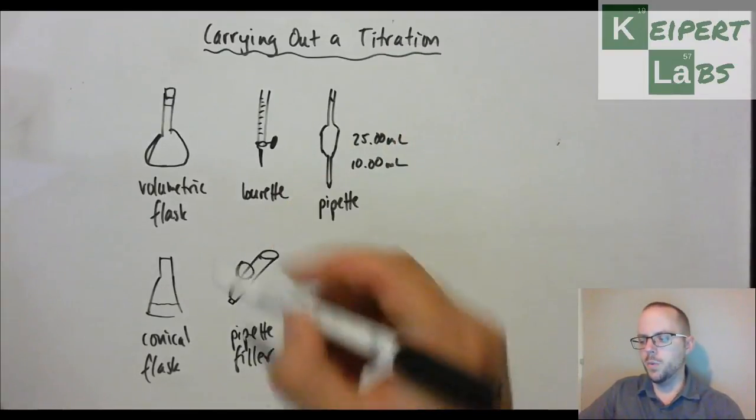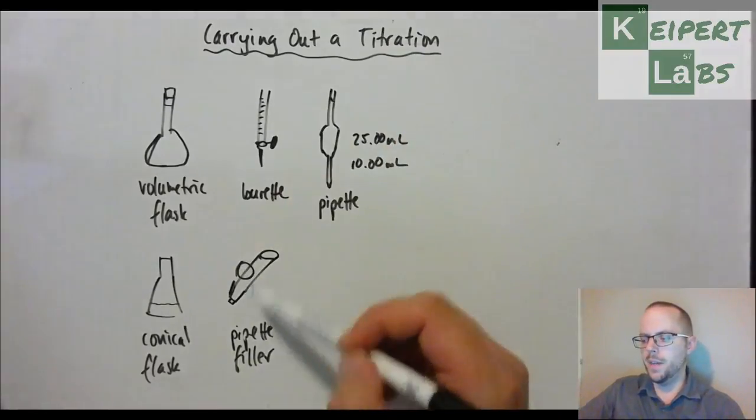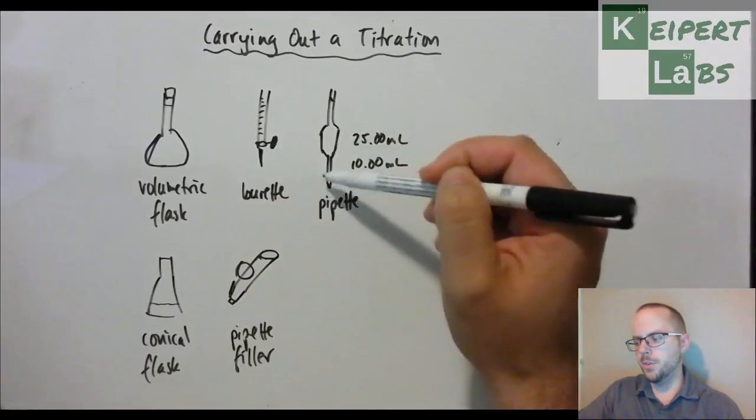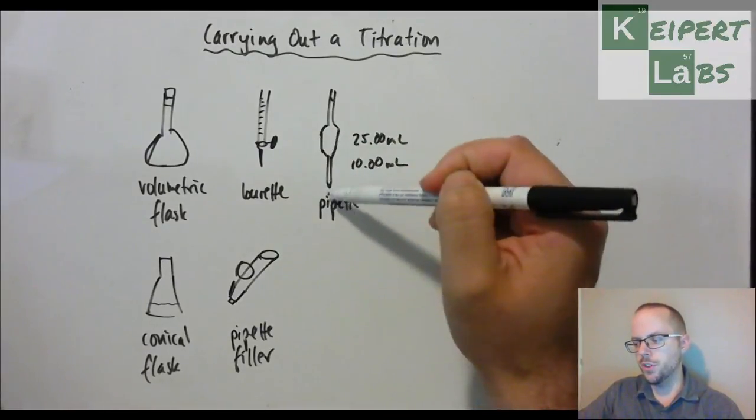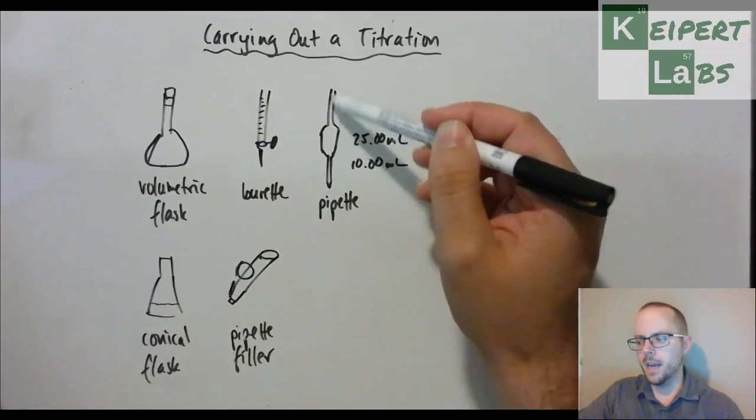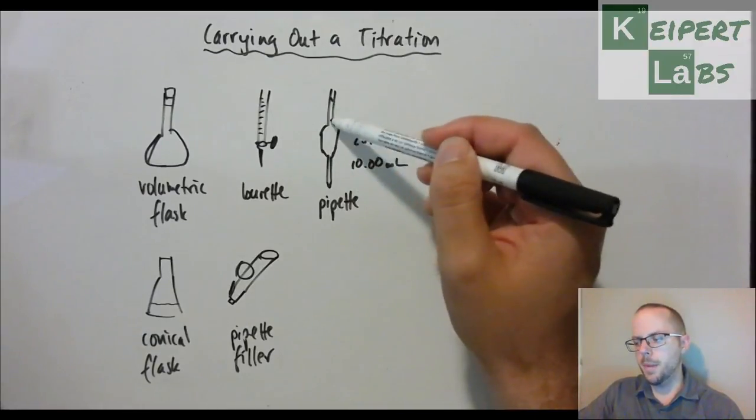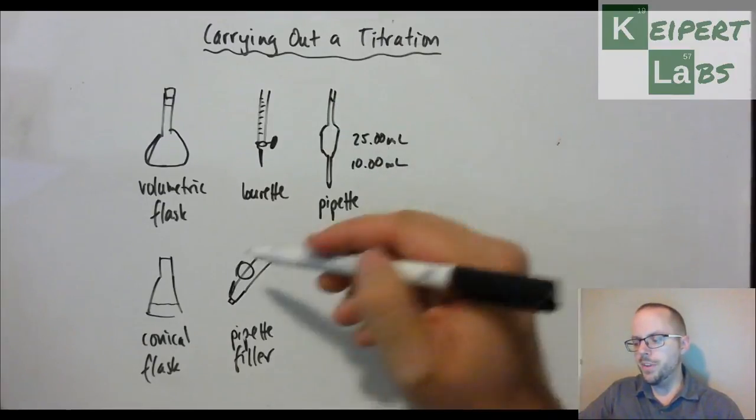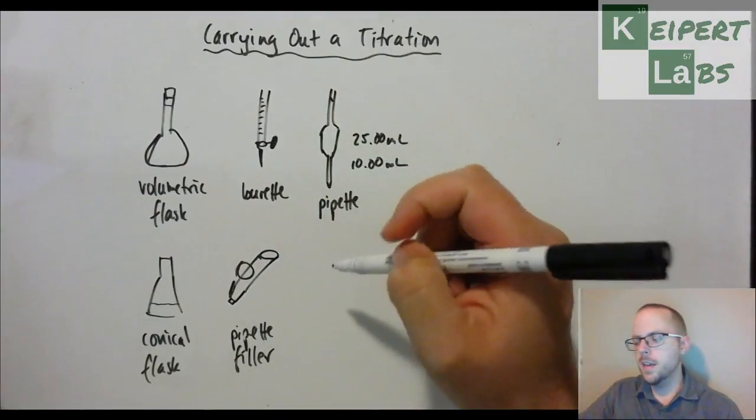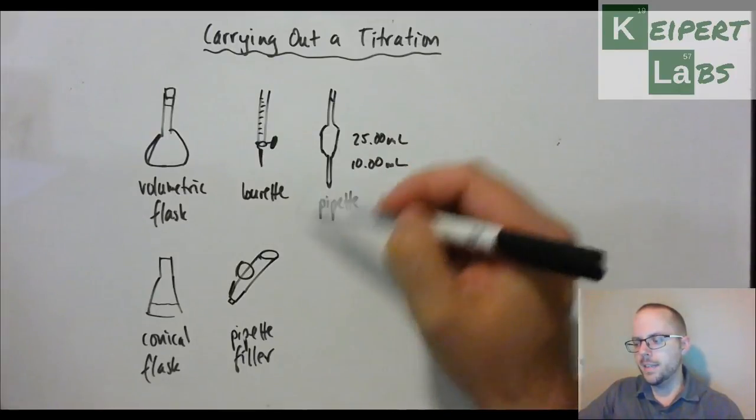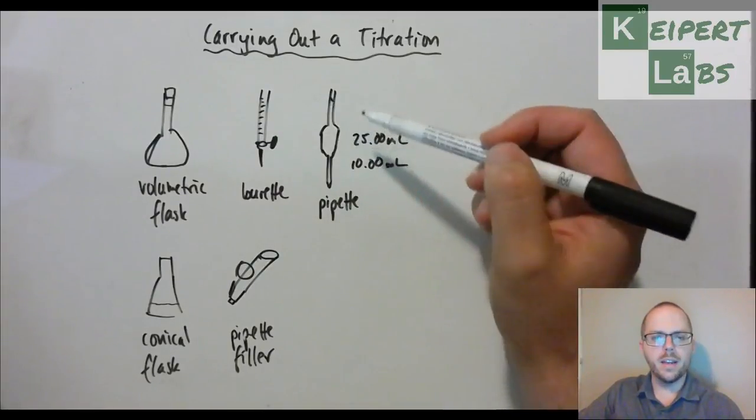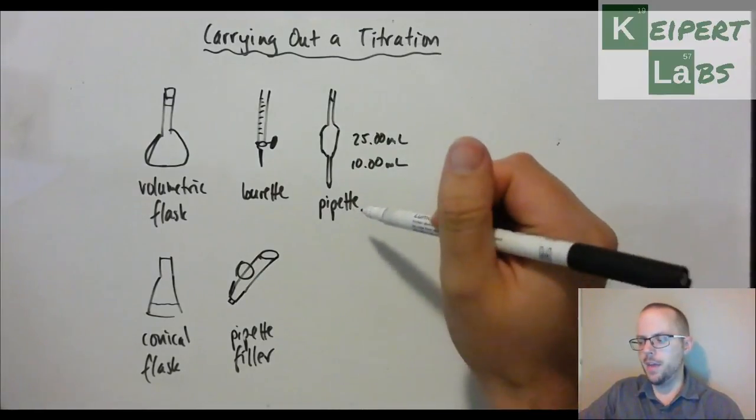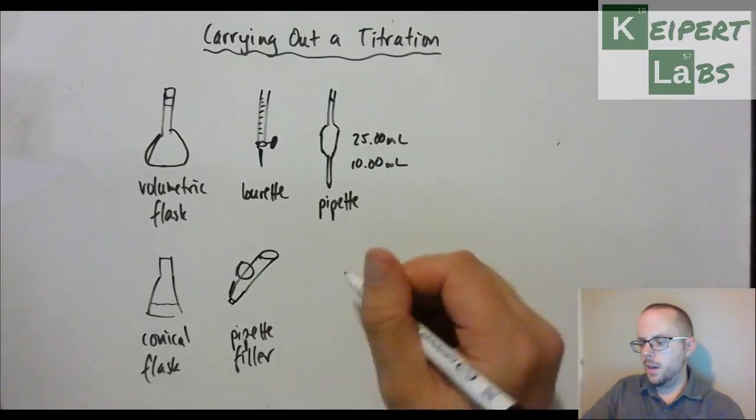You attach it to the top. These ones have a little wheel that you roll. What that does is reduce the pressure inside here, which means the atmospheric pressure on the outside is greater and pushes the solution up into that space, into that vacuum at the top. You get it above the line and then, with different pipette fillers there's different techniques, but you basically will release solution down to where the meniscus sits on that little line so that the pipette has that volume accurately in there.